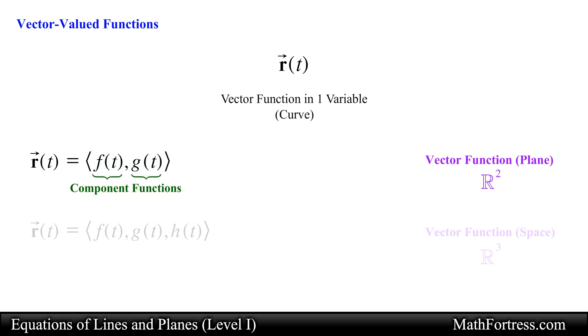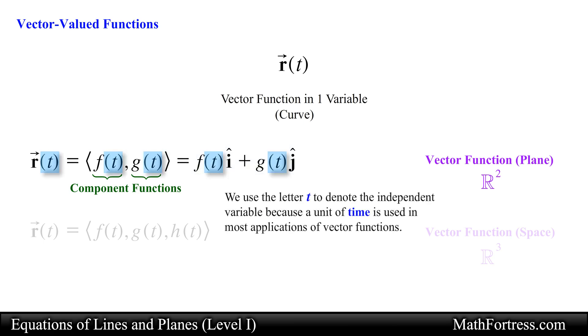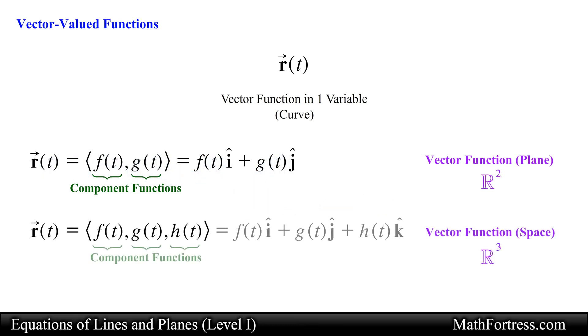We can also write the vector function by using unit vectors as follows. We use the letter t to denote the independent variable because a unit of time is used in most applications of vector functions. For a vector function in R cubed we include the third component, in this case h of t or k hat if we are using unit vectors.